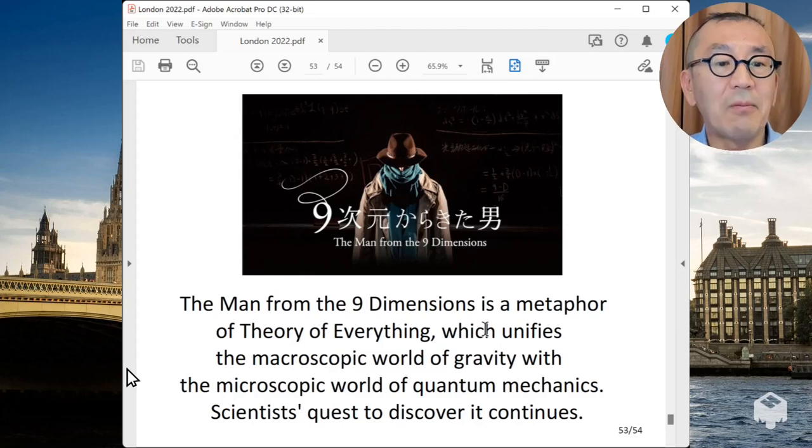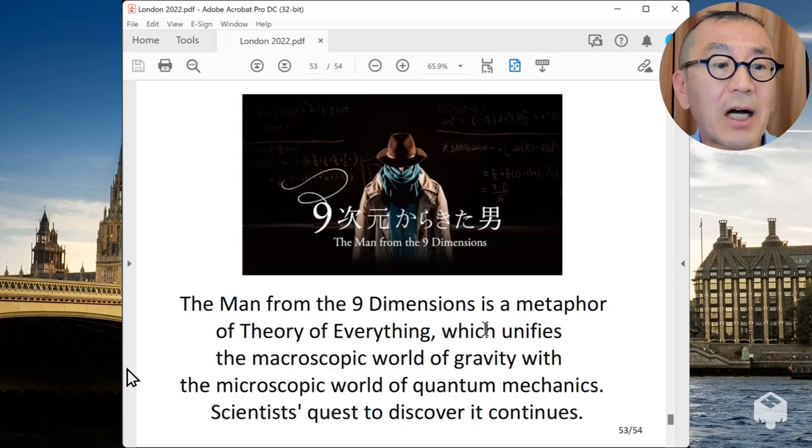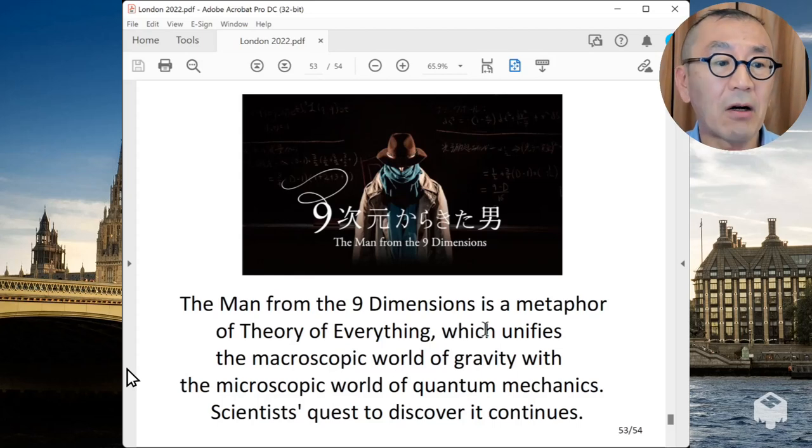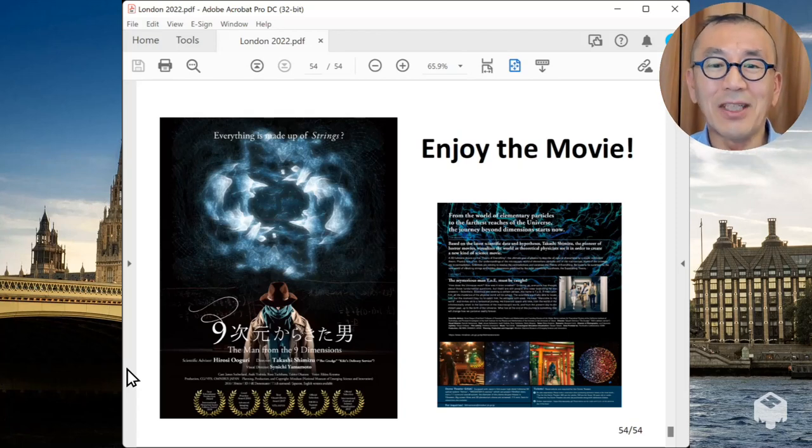And so the man from dying dimension is, in fact, this metaphor of the theory of everything to combine general relativity and quantum mechanics, which unifies a microscopic world of gravity with a microscopic world of quantum mechanics. And this movie, this adventure movie is a metaphor of a scientist quest to discover this theory of everything and to use that to solve the fundamental mystery of the universe. So I hope you will enjoy the movie. Thank you for listening.